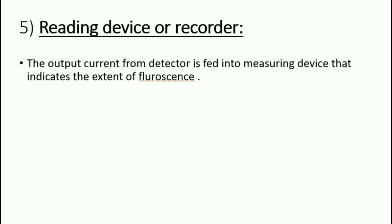Let's study the reading device or recorder. The output current from the detector is fed into a measuring device that indicates the extent of fluorescence.